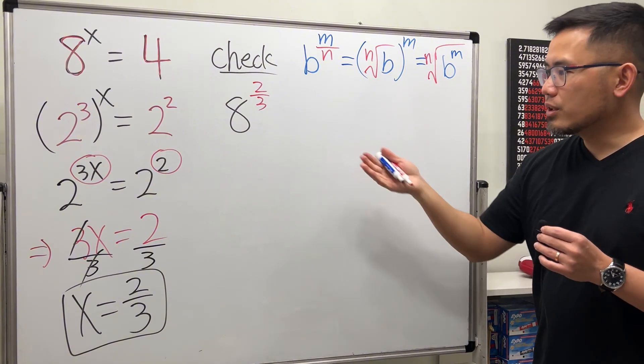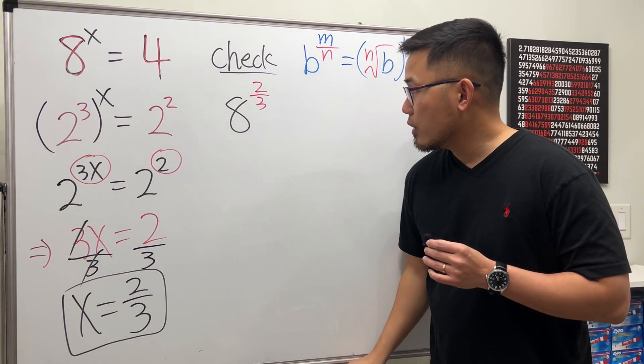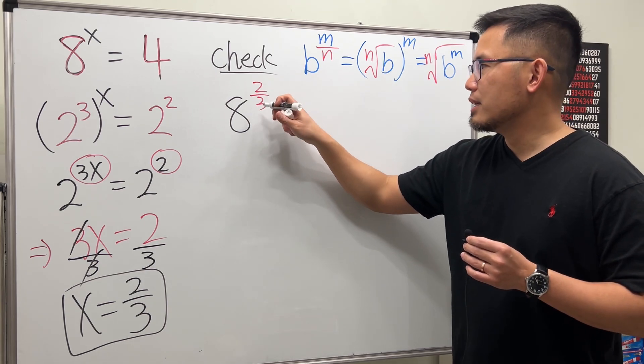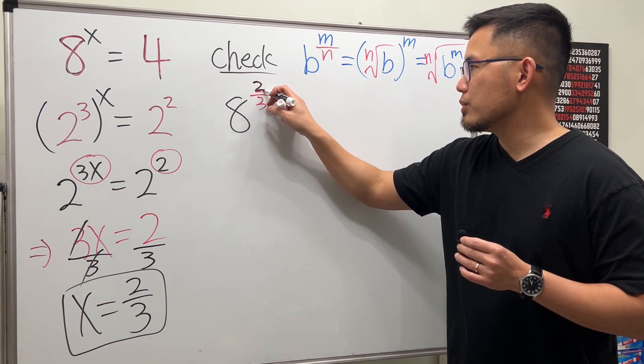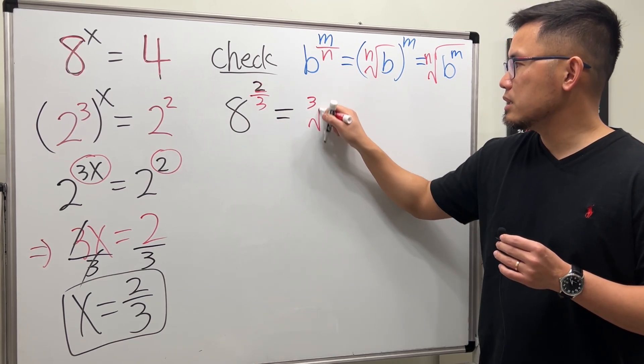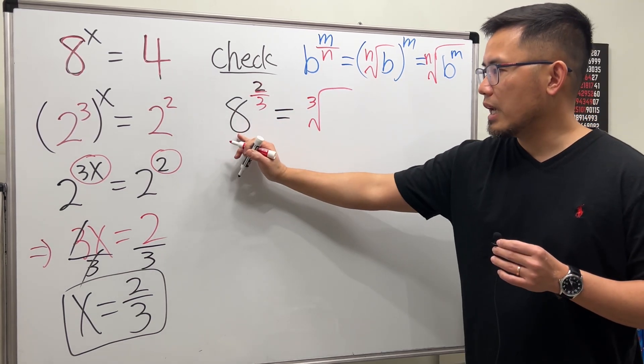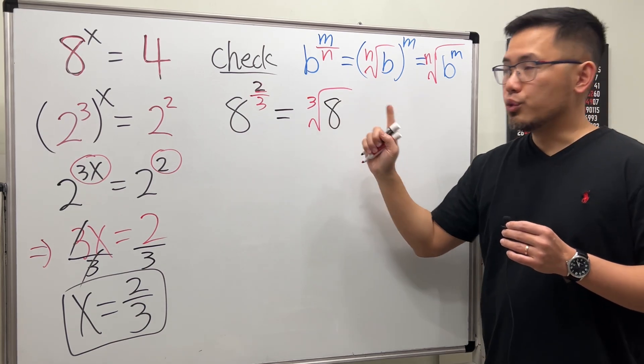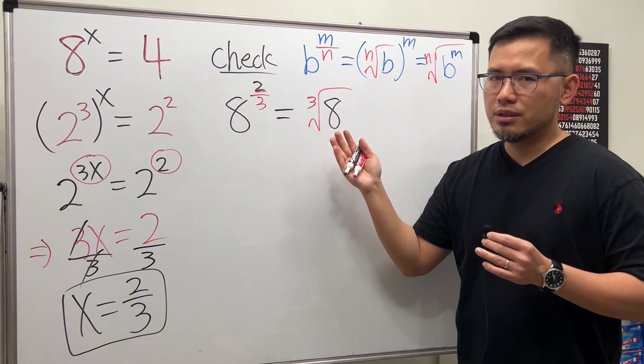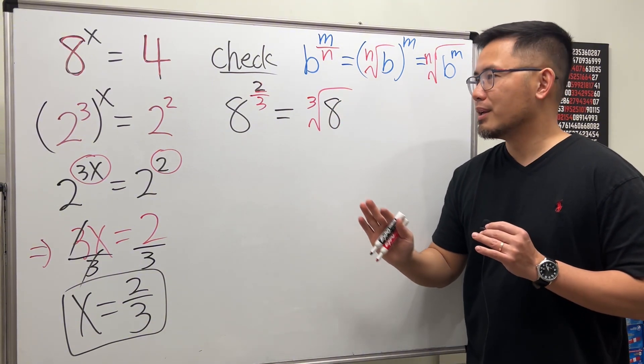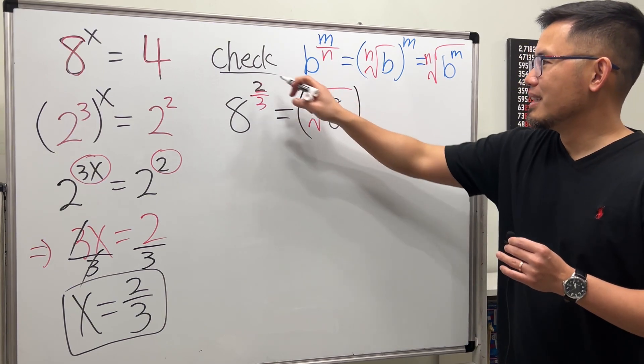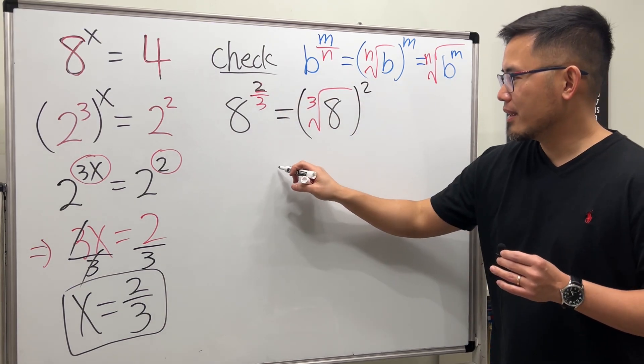So now for this right here, focus on the 3 on the bottom here, right? So again, this is 2 over 3, the 3 becomes the cube root, and then we do the cube root of 8 first. Do not put the 2 here. Sometimes the number might be too big. Even though 8 squared is 64, it's still manageable, but do the cube root, it's easier. And then the second power right here afterward, okay?